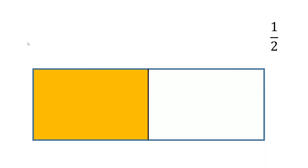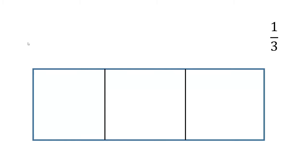A similar idea: if we had the same rectangle and we wanted to find one-third of it, we would need to cut the rectangle into three equally sized pieces, because we're dealing in thirds. Whenever we're dealing in thirds, we're cutting things up into three. We're only interested in one of those thirds, so we would shade, for example, this one — that is one out of three pieces.